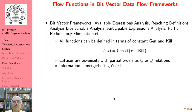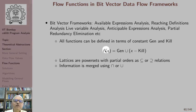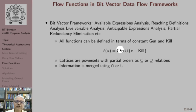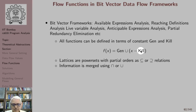All these analyses have flow functions of the following simple form: F of X, where capital X is a value in the lattice L, is defined as gen union (X minus kill). That is, some property is generated — the set of elements which satisfy this property — and certain elements that do not satisfy the property are removed. This is a fixed form of the function that we have seen.